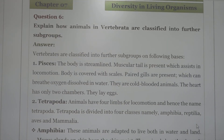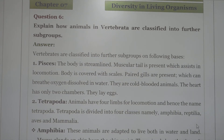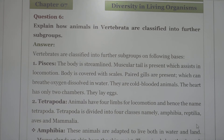Next question: explain how vertebrates are classified into further subgroups. Vertebrates are classified into five classes. First is Pisces: the body is streamlined, muscular tail is present which assists in locomotion, body is covered with scales, gills are present for breathing oxygen dissolved in water, they are cold-blooded, the heart has only two chambers, and they lay eggs.